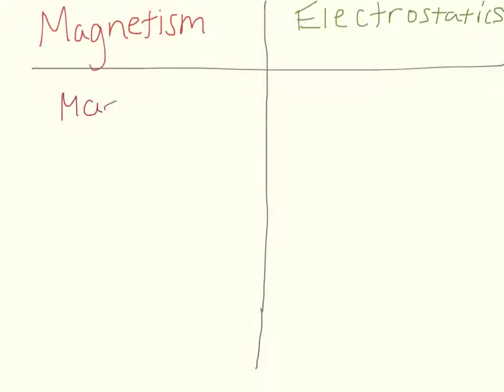Here we have the magnetic field, which we'll talk more about in later lectures. Magnetic field. And of course, in electrostatics, we have the electric field. We'll be drawing parallels between these two in later lectures.